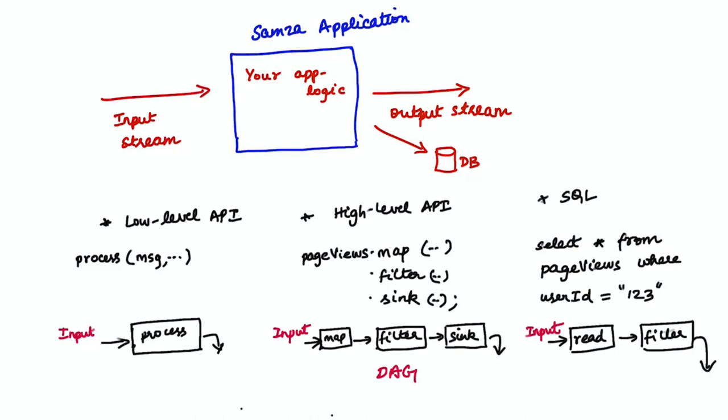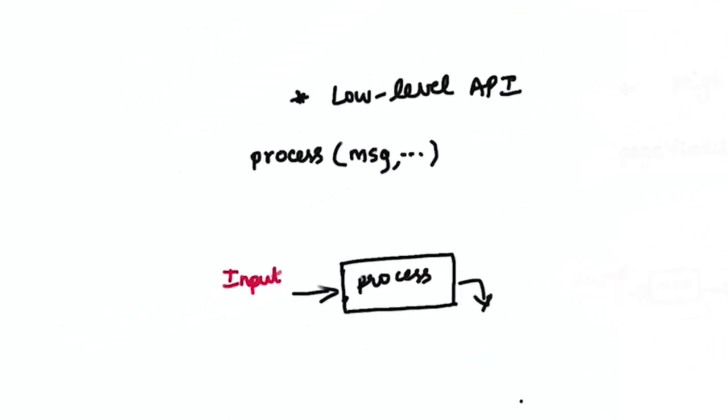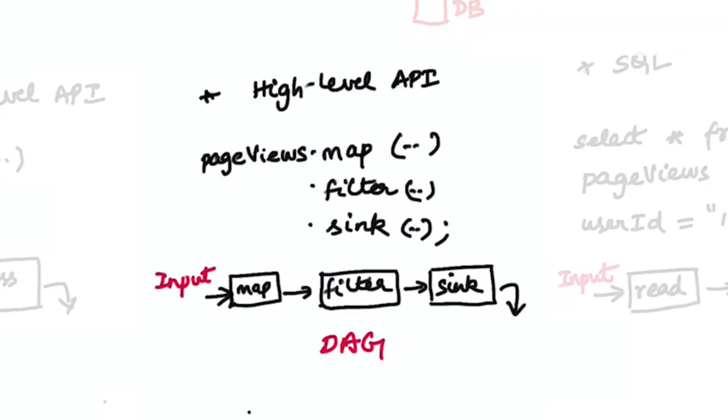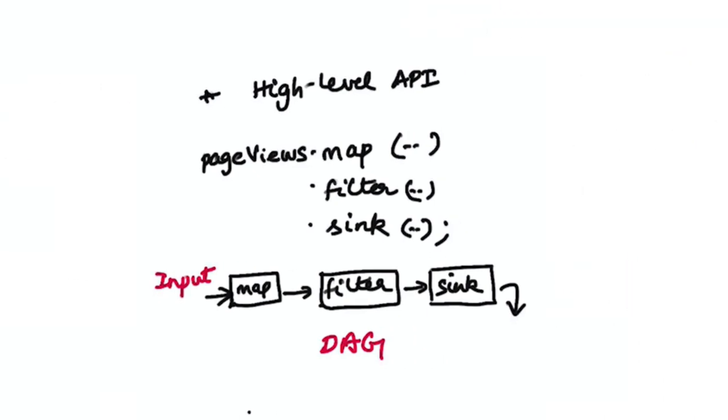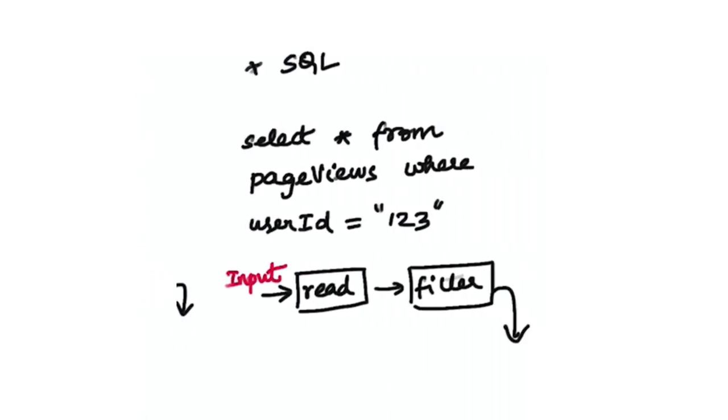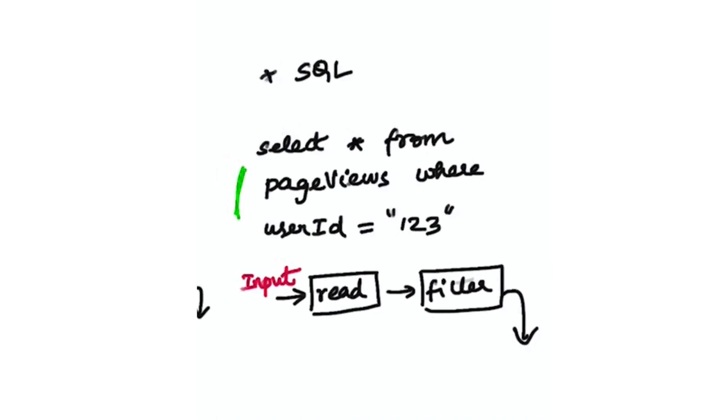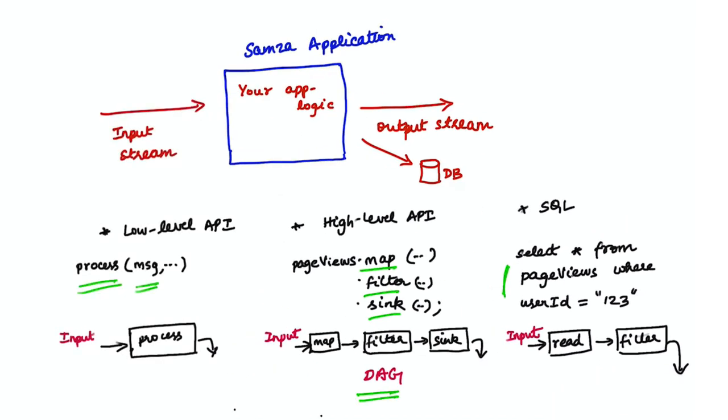Recall that your application logic can be specified using the low-level API that offers a simple process callback, the high-level API that allows you to express your computation as a series of functions, or Samza SQL that allows you to express your application logic in SQL. Regardless of which API you choose, Samza logically expresses your computation as a DAG of operators with the output of one feeding into the other.